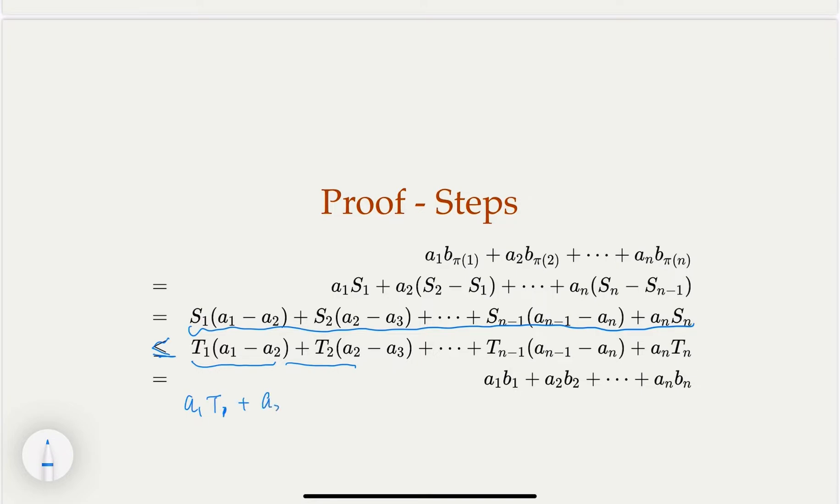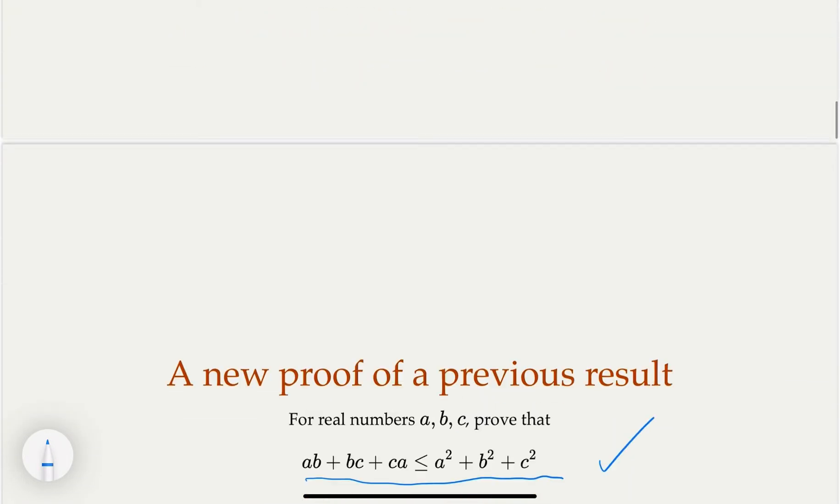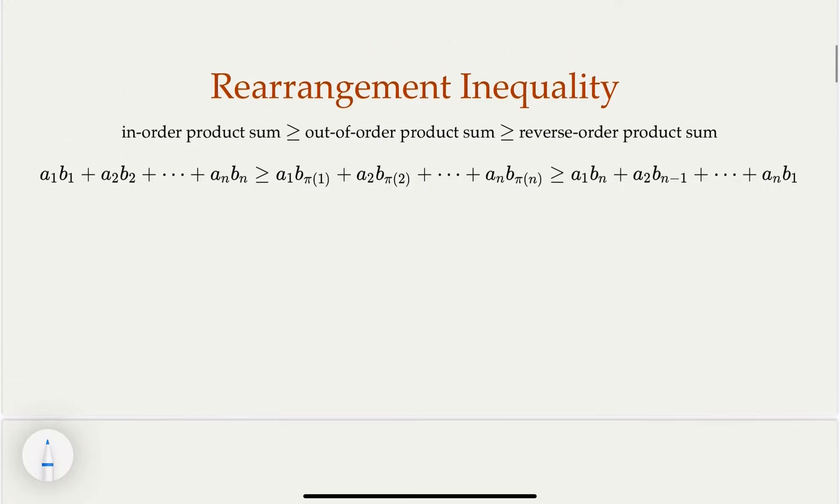Plus a_3 times (T_3 - T_2). Now this is actually nothing but b_1, this is nothing but b_2, this is nothing but b_3. So this is actually the in-ordered one. So here we have proven that the permutated one is smaller than the in-ordered one, which is the first half of the inequality. We have proven the first part.